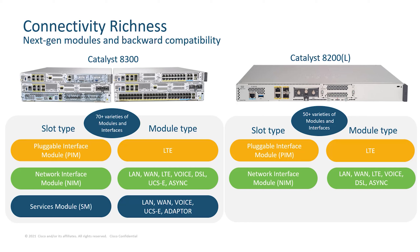Similar to ISR 4Ks, with the C8300 we do have NIM and SM slots with the addition of a PIM slot for cellular. These C8K platforms are backwards compatible with most of the ISR 4K modules, as well as supporting next-gen modules to provide better performance and more options for WAN and LAN connectivity. In addition, there is a dedicated PIM slot for Cat18 and 5G cellular options.